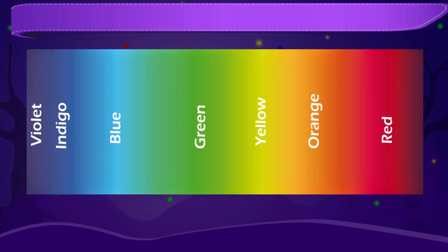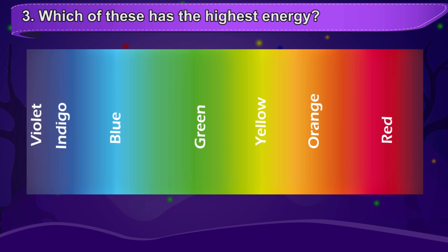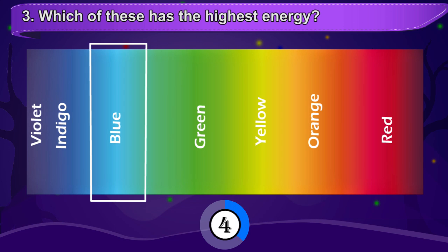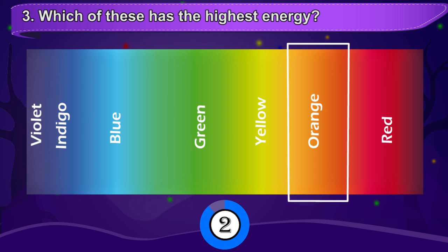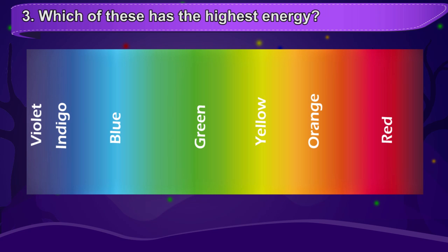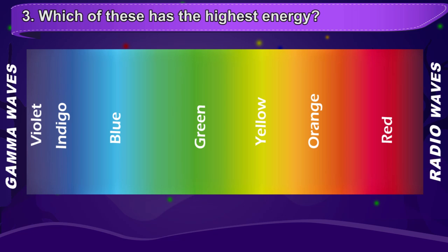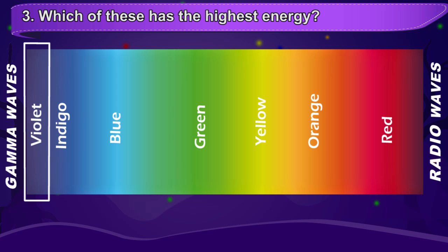In the given spectrum, which of these has the highest energy? The spectrum given here is the visible spectrum. In the increasing order of wavelength from gamma waves to radio waves, violet has the lowest wavelength and for that reason the highest energy.